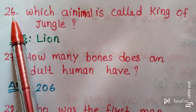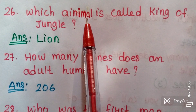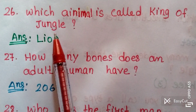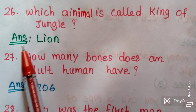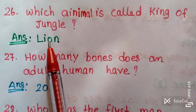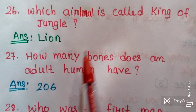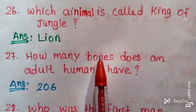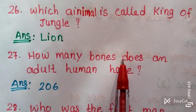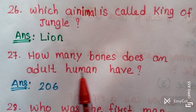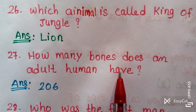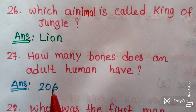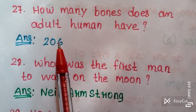Question twenty-six: Which animal is called the king of the jungle? Answer: Lion. Question twenty-seven: How many bones does an adult human have? Answer: 206 bones.